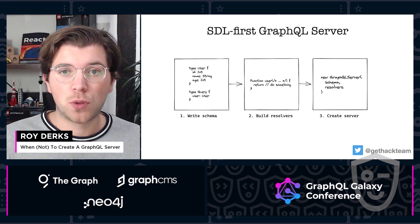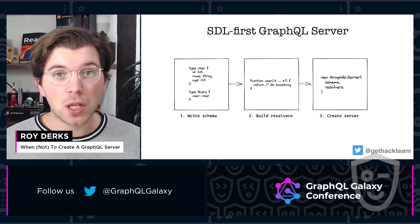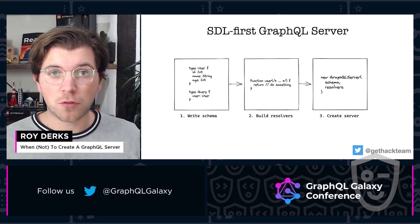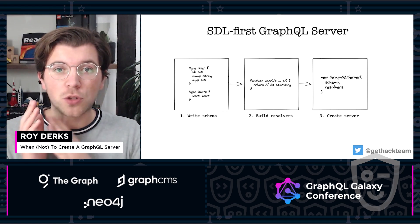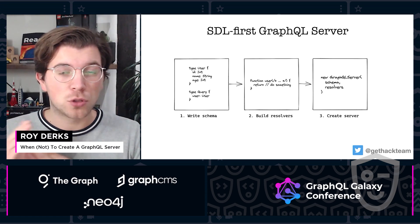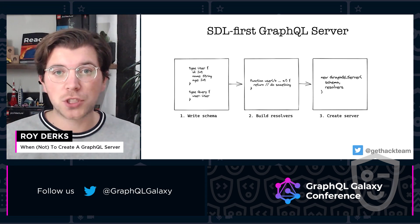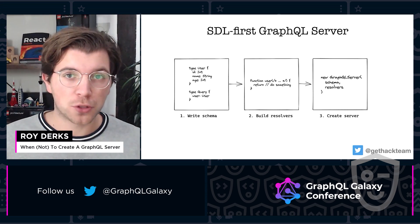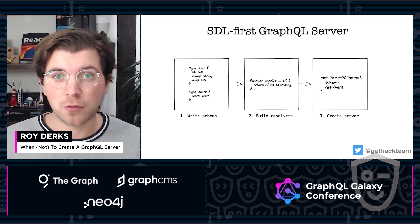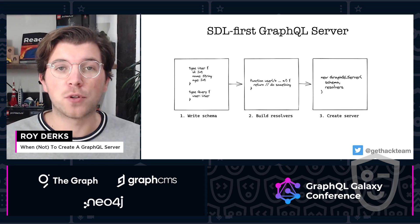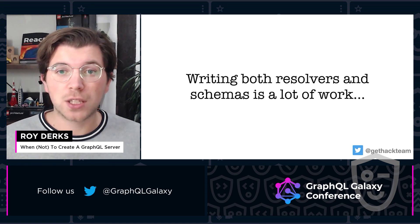There is a solution for this: the SDL-first GraphQL server, also known as a schema-first GraphQL server. The idea is that you write your schema first — either in GraphQL SDL or using external libraries like GraphQL JS, which lets you write schema-first servers using their own methods. You create your schema, then create the resolvers based on it, and this builds a server for you. You get a very nice separation of concern with your schema separated from your resolvers and full control of everything. The major downside, however, is that writing both resolvers and schemas is a lot of work.